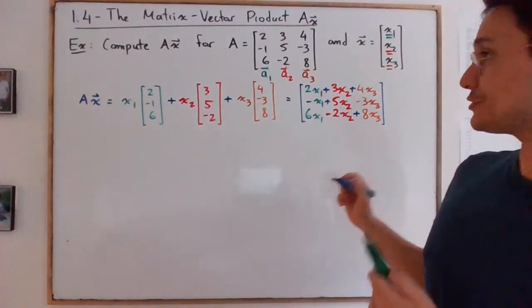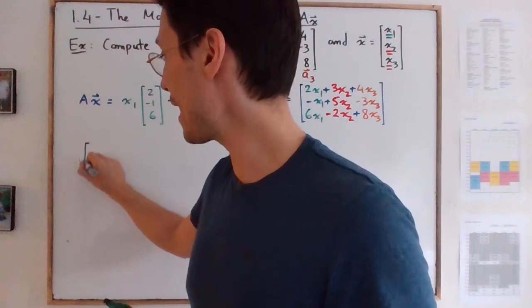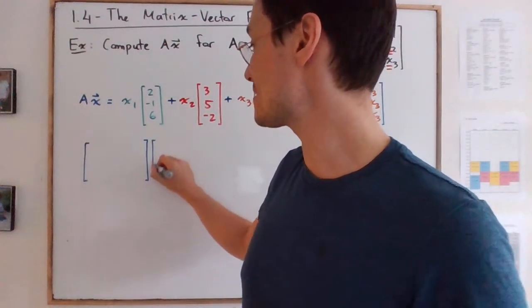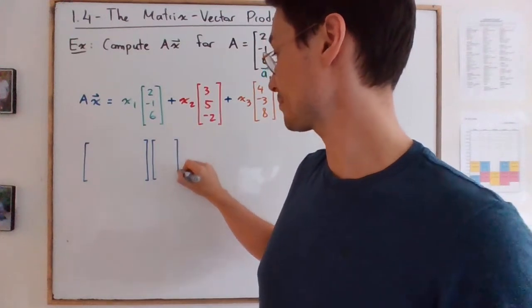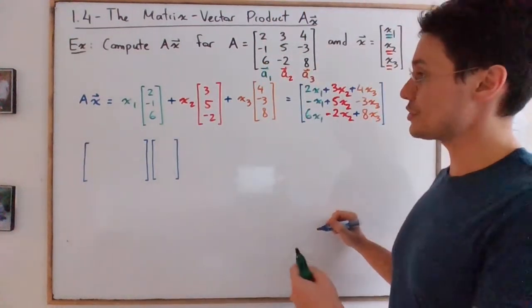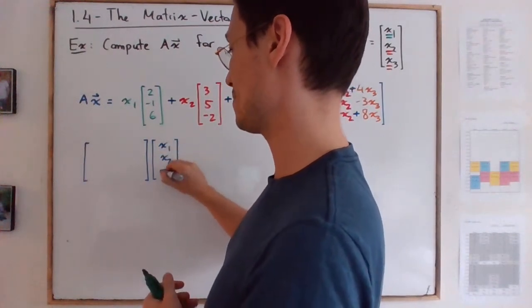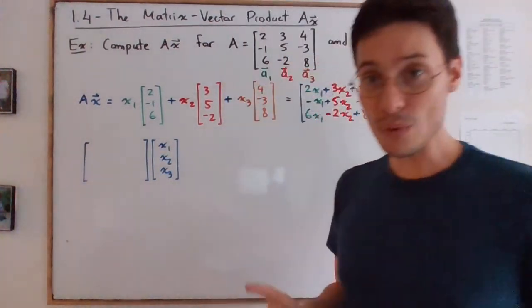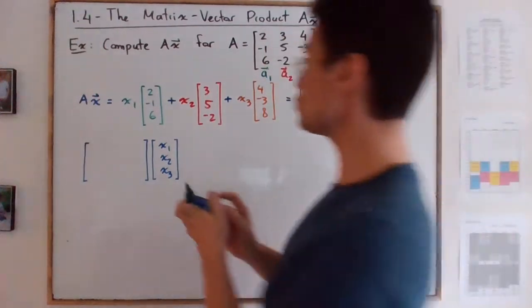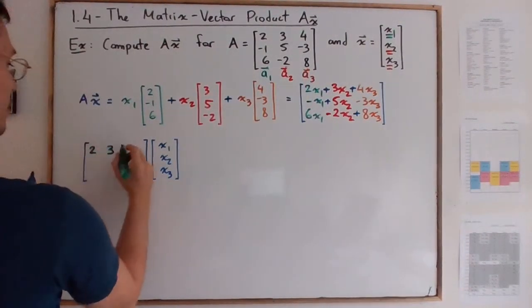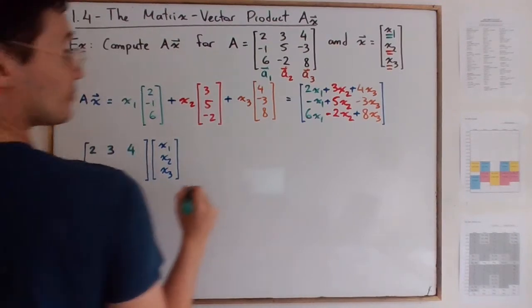Now what I'm going to do is I'm going to write just one row at a time, and you will see why this is important. So here I have x1, x2, x3 as usual. And notice that the first row of A is [2, 3, 4].